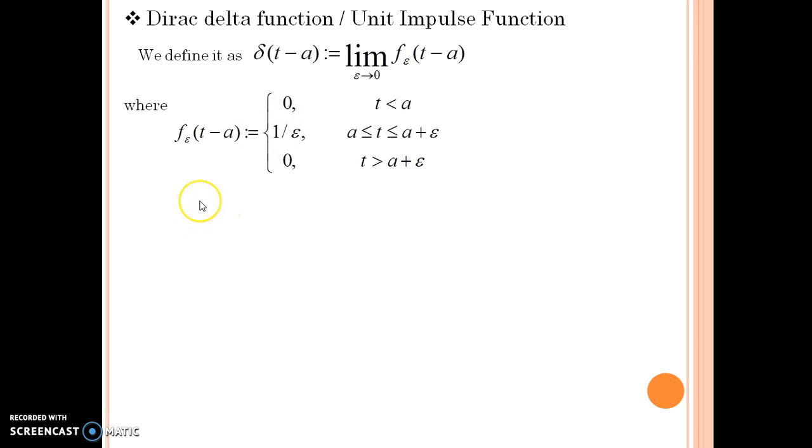And let us take some results without proof regarding Dirac delta function. I am giving you this result. Dirac delta function is nothing but the derivative of Heaviside function.